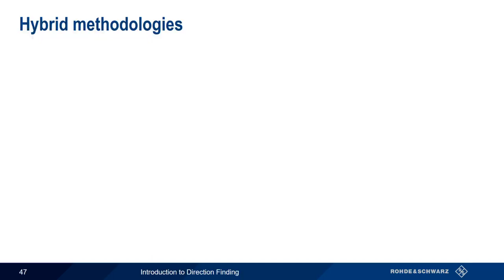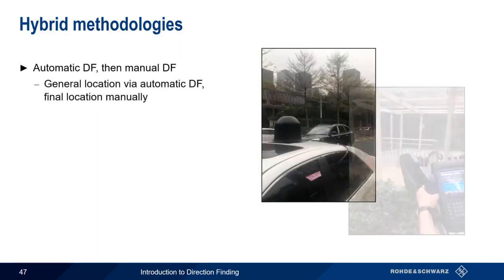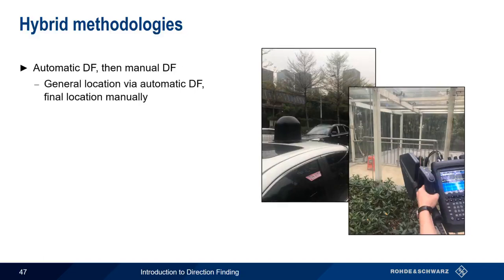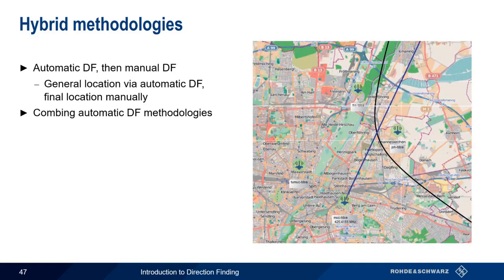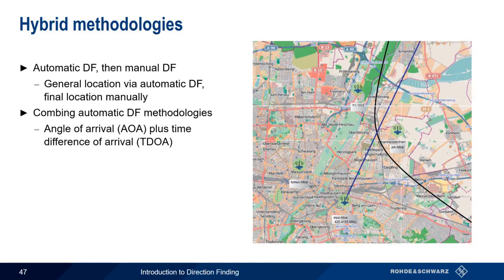The final topic in this presentation is something called hybrid methodologies. One definition of a hybrid methodology is actually quite common in many direction finding applications — namely, using an automatic direction finding system to obtain the general location of a target, say within 100 meters or so, and then switching to manual or handheld direction finding to narrow down the location to the meter level. But normally what's meant by the term hybrid is the combination of two different automatic direction finding methodologies, in particular the combination of an angle of arrival methodology and a time difference of arrival methodology. Hybrid methodologies are probably the most exciting new development in direction finding over the last few decades.